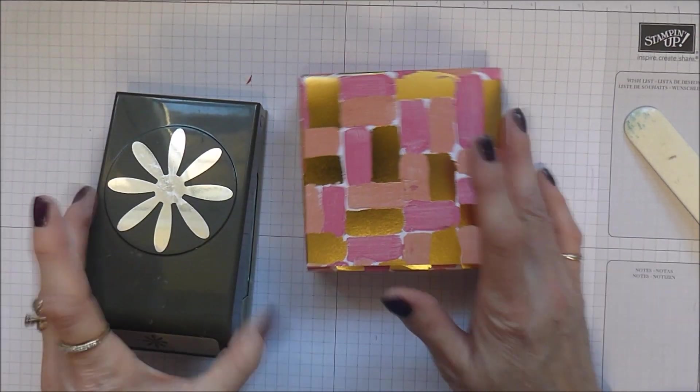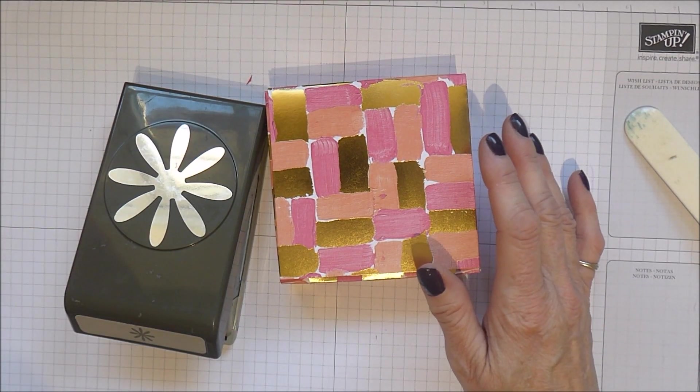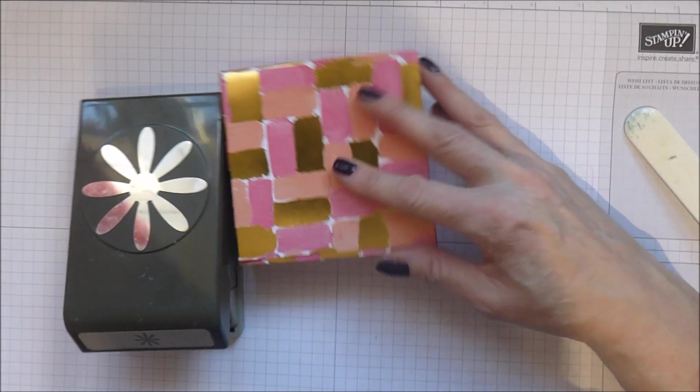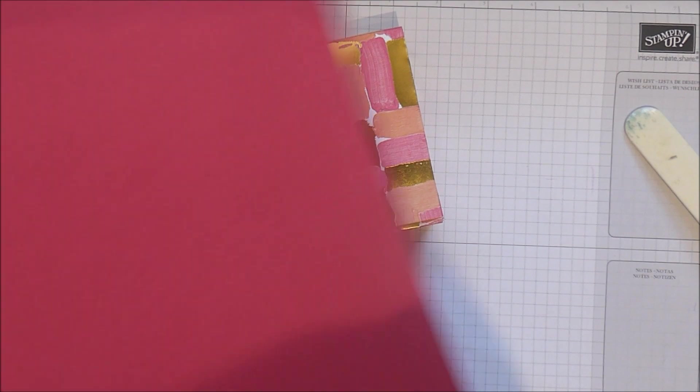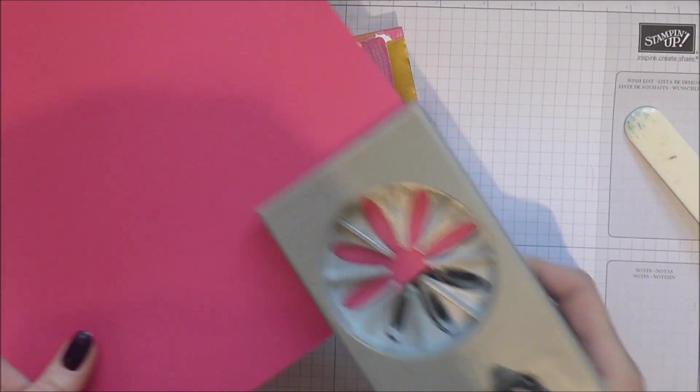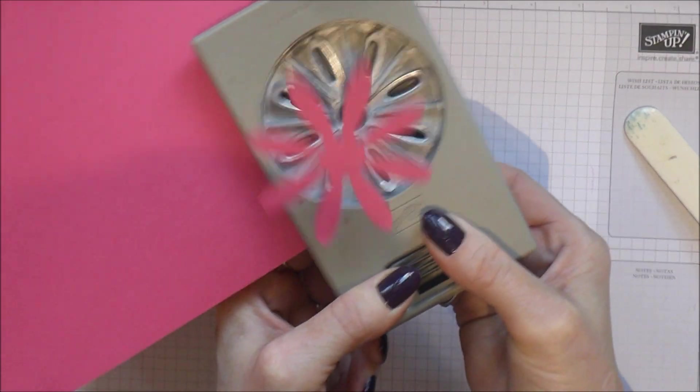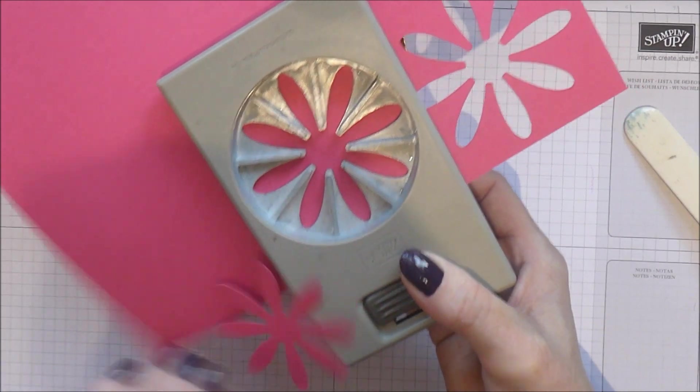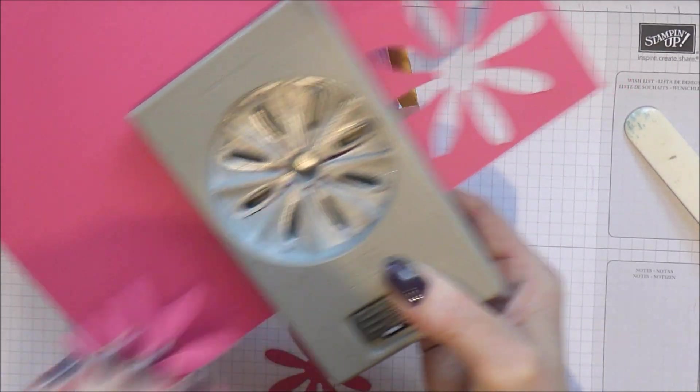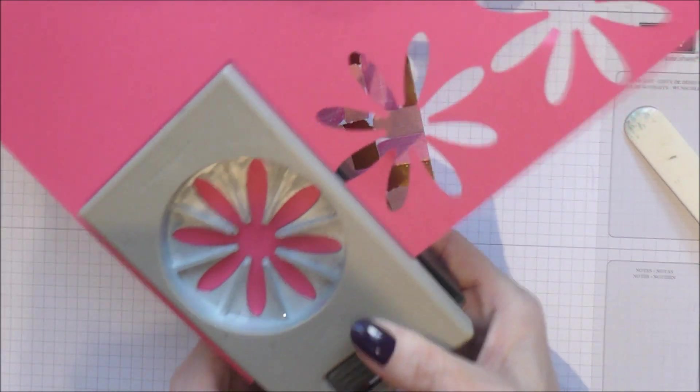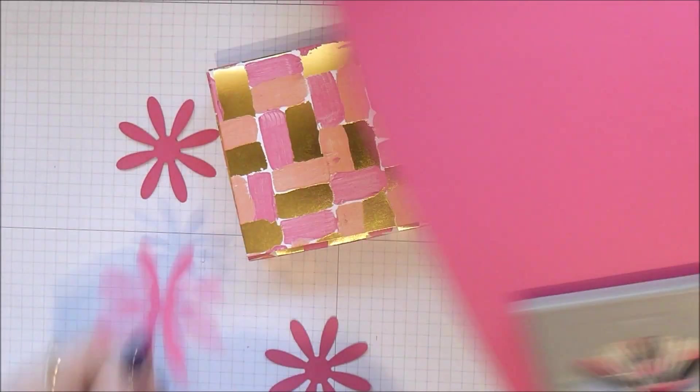So I've got my little daisy punch here. I've got some melon-mambo cardstock to match the colours that are going on here in the papers. And I'm going to punch myself out three daisies.